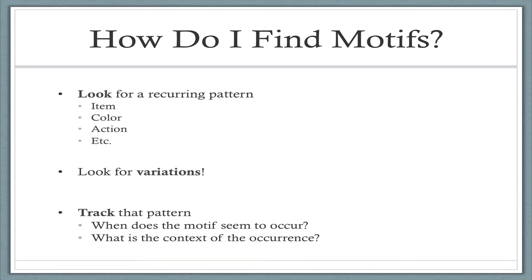How do we find motifs? Well, first, we have to look for a recurring pattern. So ideally, we are reading actively. And once we start to notice that the same thing keeps being referenced over and over again, or perhaps characters keep saying the same exact words over and over again, or perhaps a color keeps being repeated over and over again, we have to start paying attention to that, start tracking it, and start writing down all the instances where we see that motif coming back. We also need to pay attention to variations of a motif.